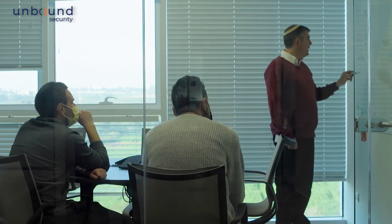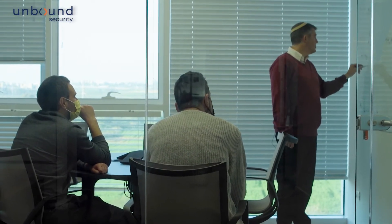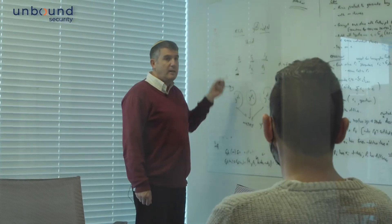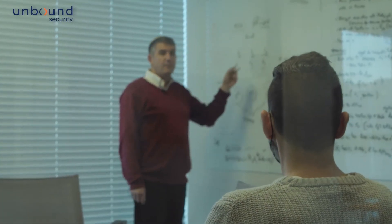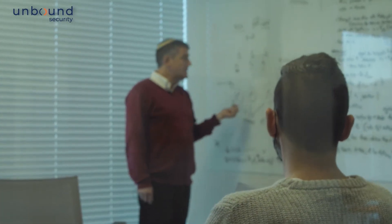Unbound Core is a fundamentally new approach to cryptographic key management in the enterprise. It enables organizations to manage all of their keys and all of their cryptographic solutions in one place, wherever they are. By virtualizing cryptography, your cryptographic infrastructure now suddenly works the way all your other software works.